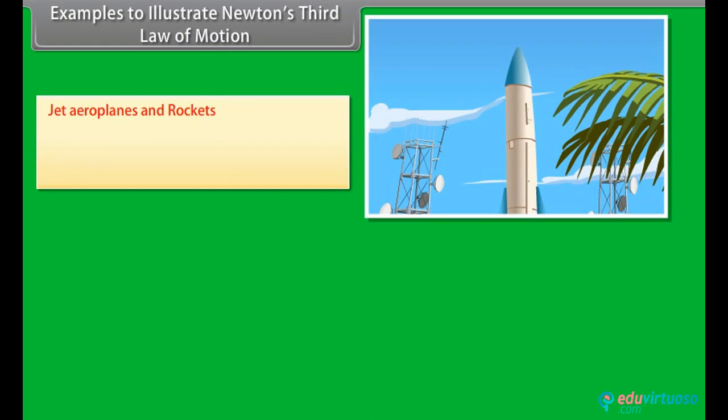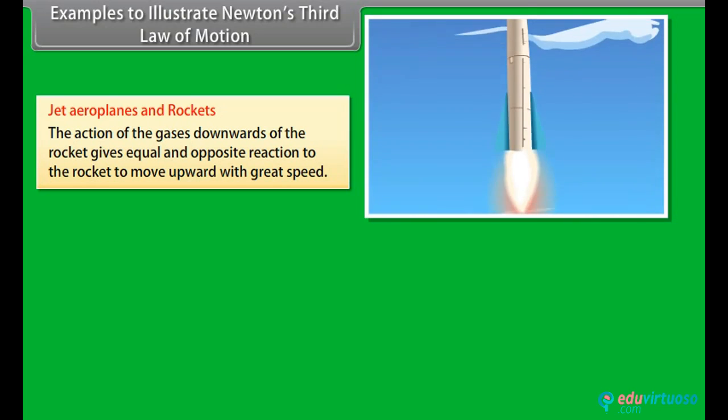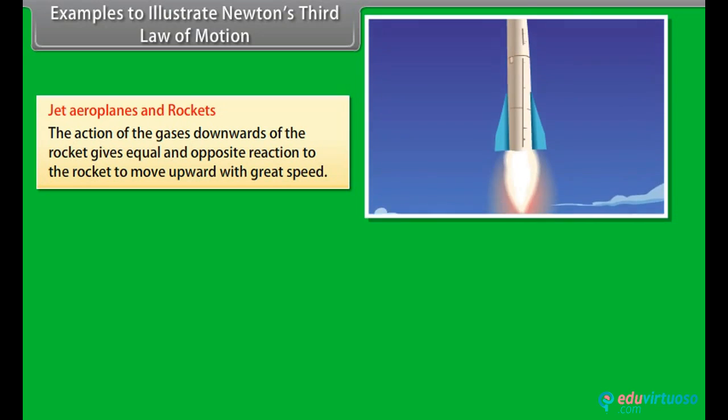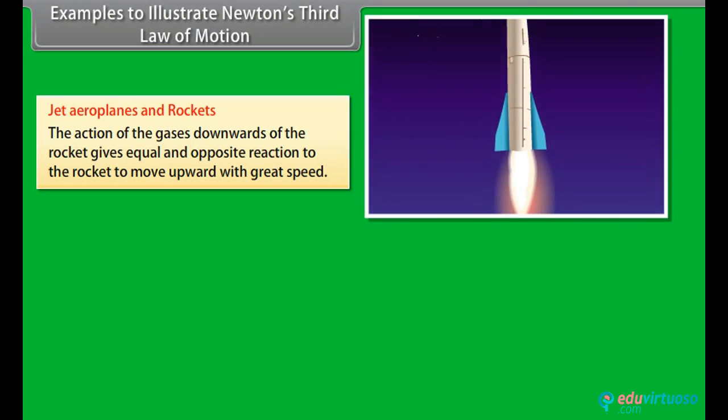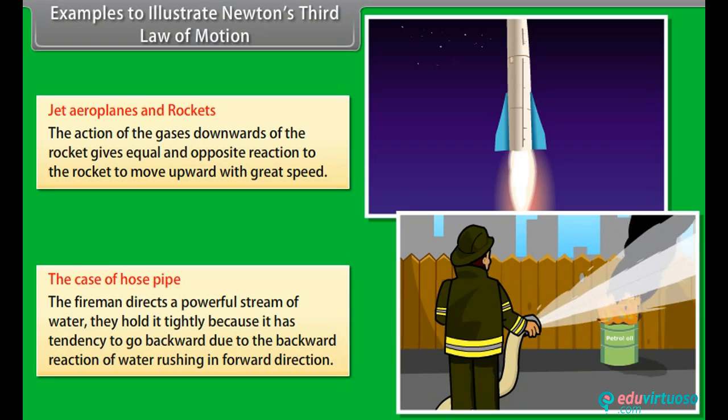Jet airplanes and rockets. The action of the gases downwards of the rocket gives equal and opposite reaction to the rocket to move upward with great speed. The case of hose pipe. The fireman directs a powerful stream of water. They hold it tightly because it has tendency to go backward due to the backward reaction of water rushing in forward direction.